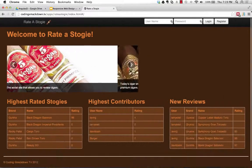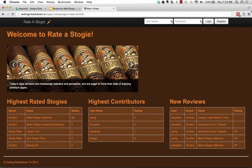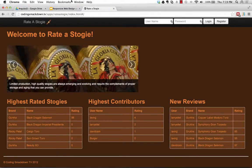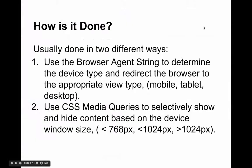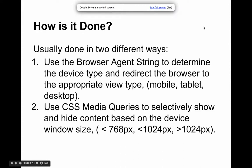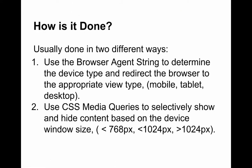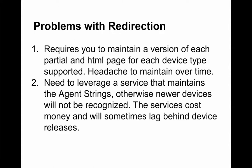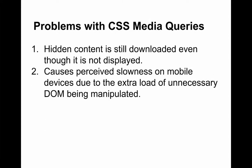The problem with this is that if you're on a mobile device smaller than 768 pixels, you're still pulling down all the images and content for the desktop site, even though it's hidden in the background. That mobile device bogs down trying to manipulate all that hidden CSS. Plus it looks slow because it's pulling down big images over 3G or 4G. So that's not really a good solution.